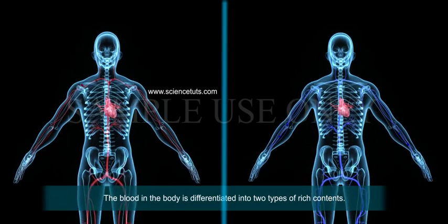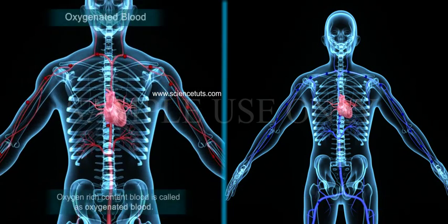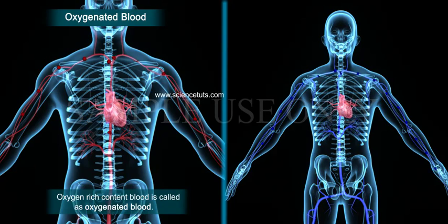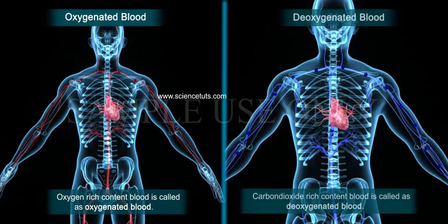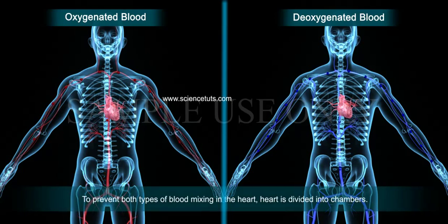The blood in the body is differentiated into two types based on rich contents. Oxygen-rich blood is called oxygenated blood. Carbon dioxide-rich blood is called deoxygenated blood.